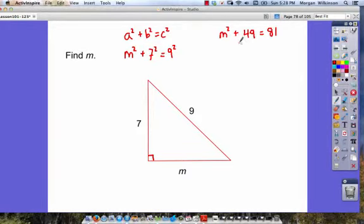Now to find m squared, we're going to subtract 49 from both sides. That leaves us with m squared is equal to, we'll borrow from the 8 to get 7, 11 minus 9 is 2, and 7 minus 4 is 3. So let's rewrite that neater: m squared is equal to 32.